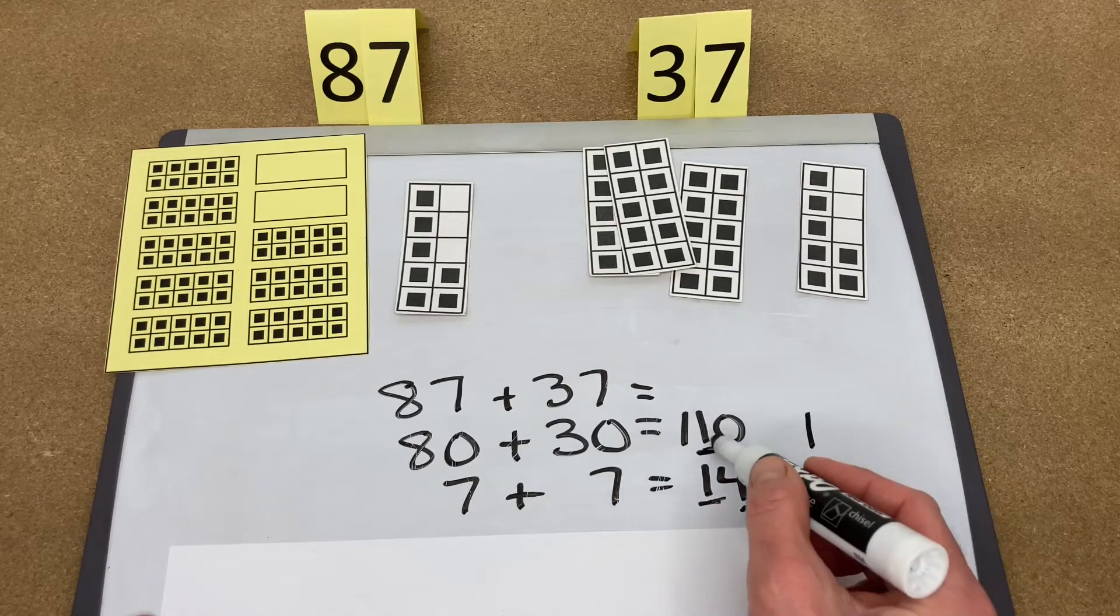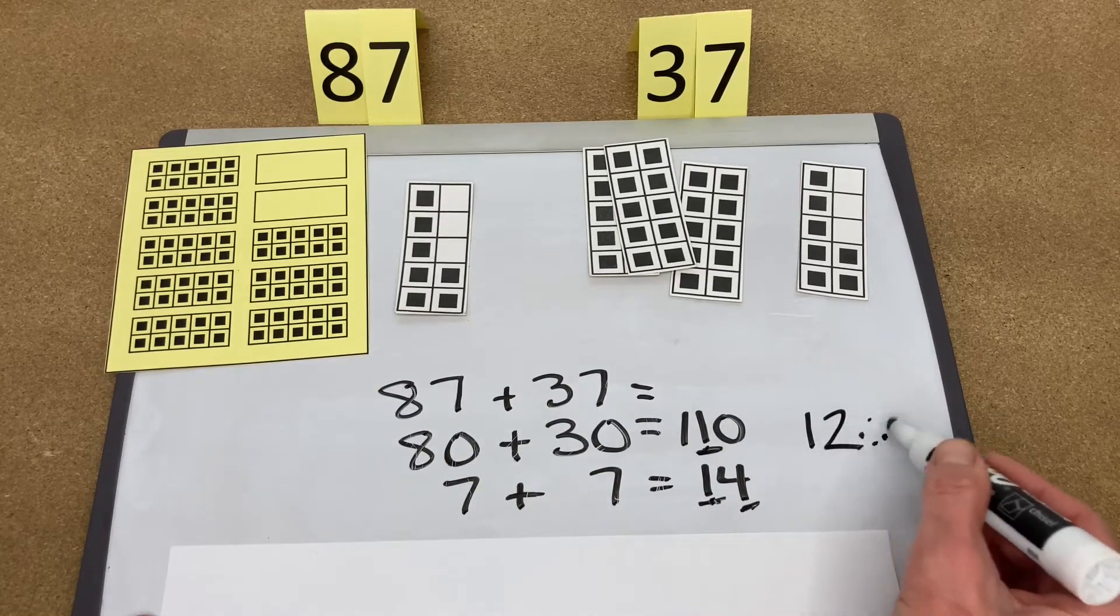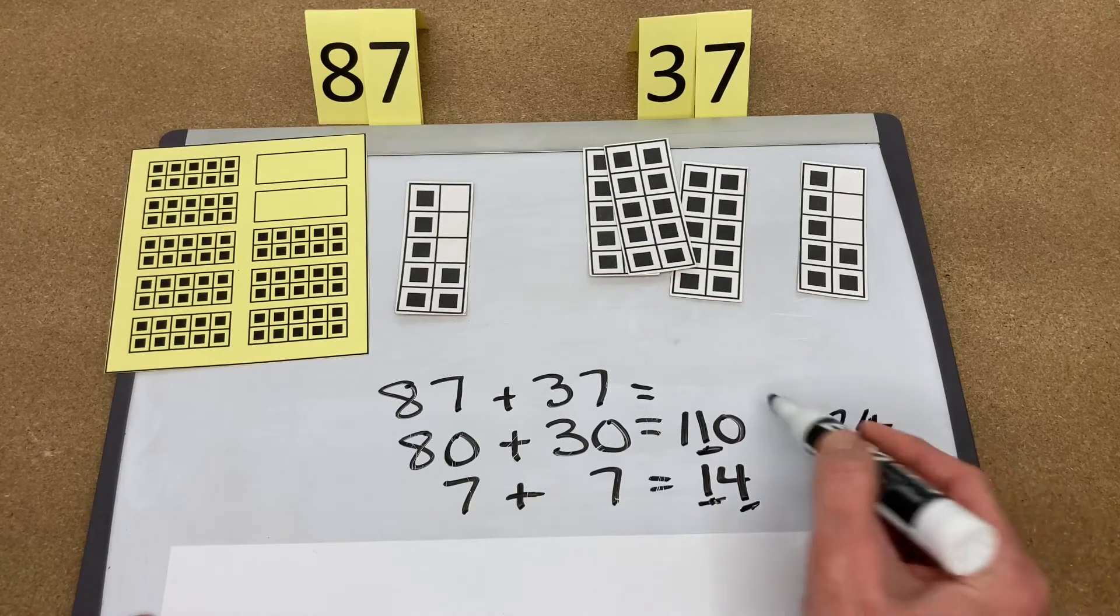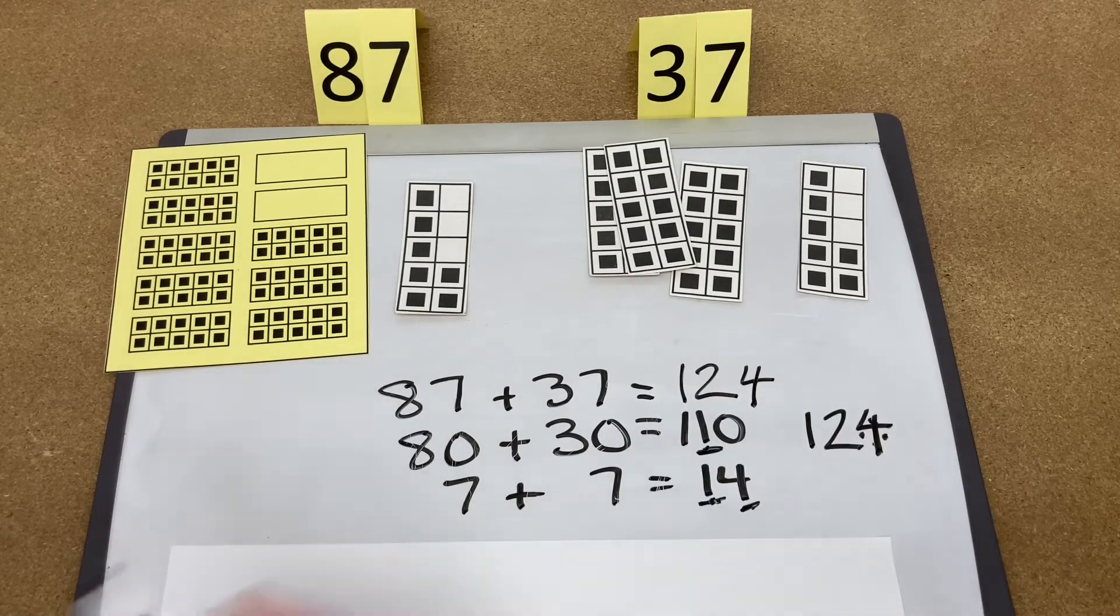So 100 and 10 plus 10 is 20, and then the 4 jumps over the 0 for 124, and we rewrite the answer here, 124.